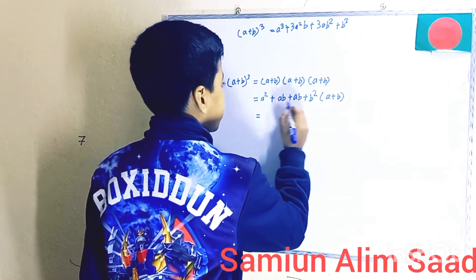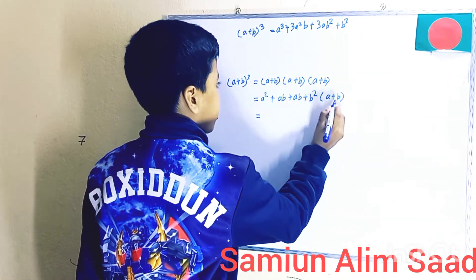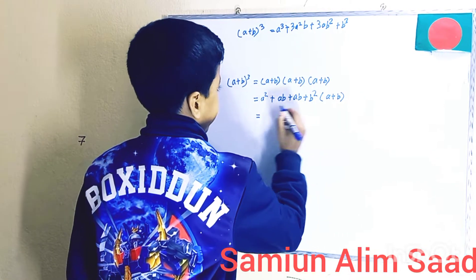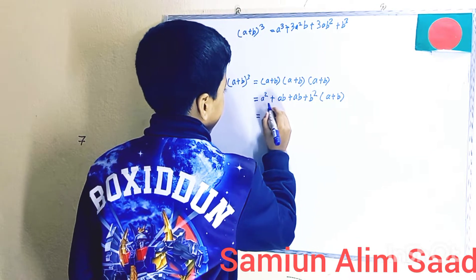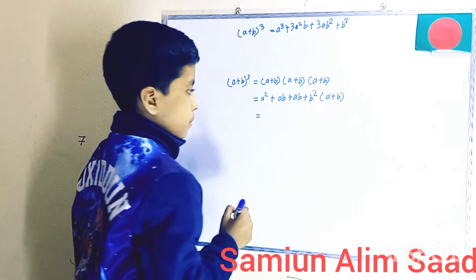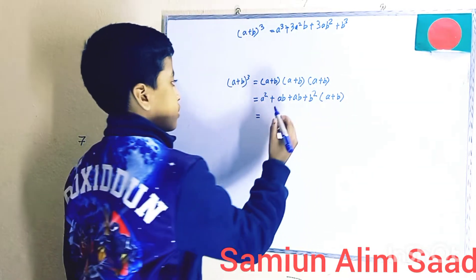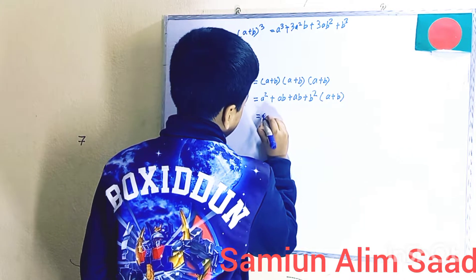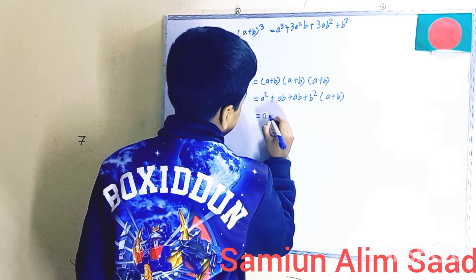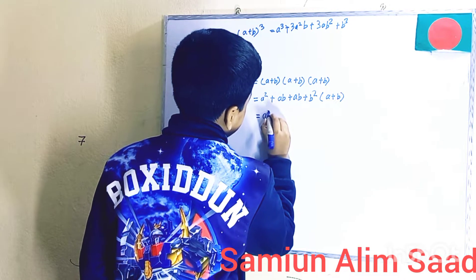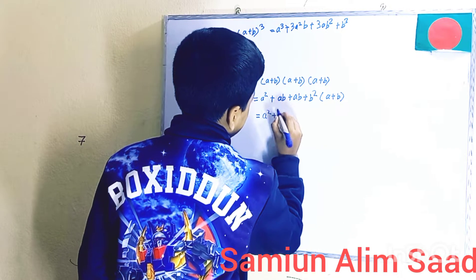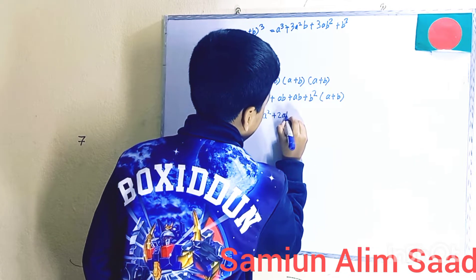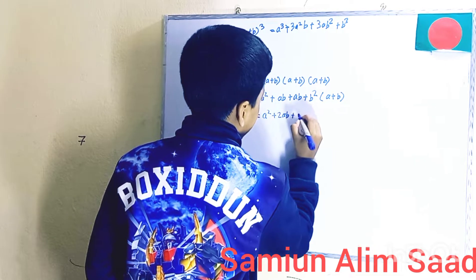We should multiply A plus B with this entire thing. First we simplify — A square plus AB plus AB gives us A square plus 2AB plus B square. Then we put A plus B right next to it.